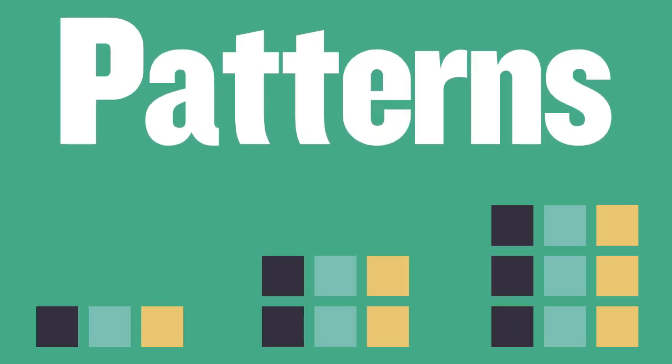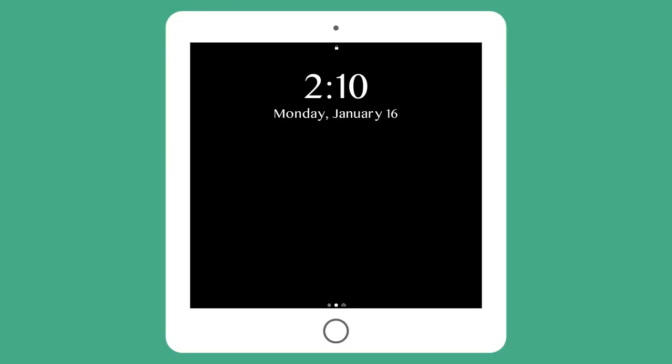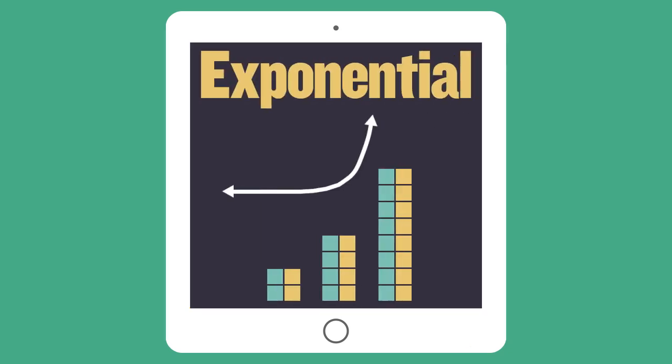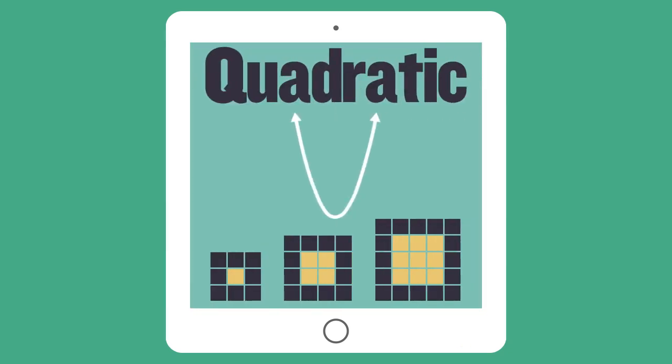In Algebra 1, we find patterns and make predictions with special relationships called functions. The three big function families we study are linear, exponential, and quadratic functions.